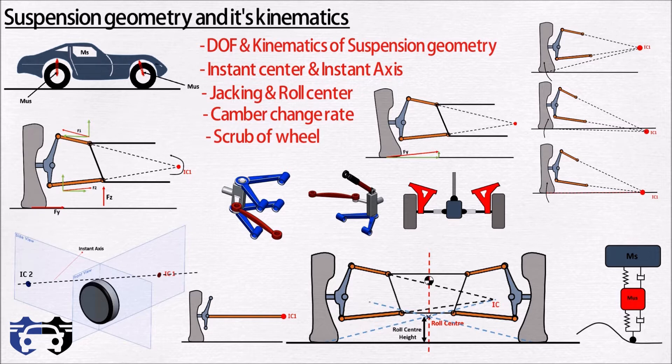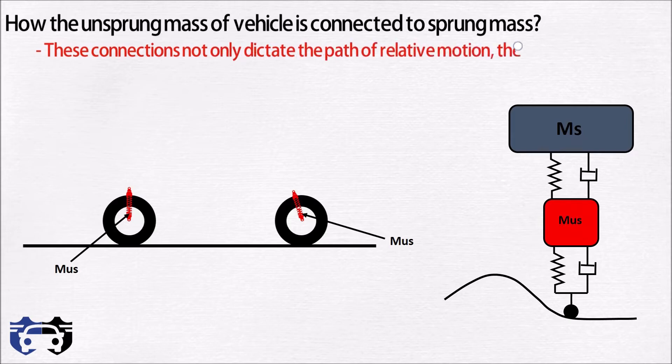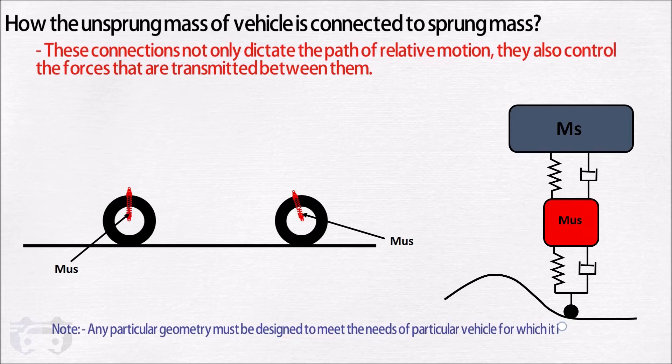When we talk about suspension geometry, it means a broad subject of how the unsprung mass of vehicle is connected to sprung mass. These connections not only dictate the path of relative motion, they also control the forces that are transmitted between them. Note any particular geometry must be designed to meet the needs of particular vehicle for which it is to be applied. There is no single best geometry.